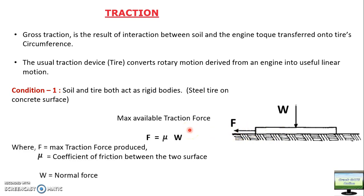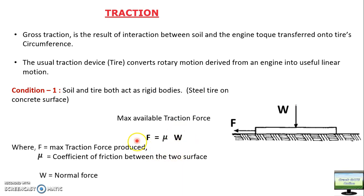There will be some coefficient of friction between the two bodies and then force F is acting in this direction. The resultant maximum available traction force will be F equals mu times W. This is a simple frictional theory which you might have read in your physics books, so I will not explain much into this — it is a very simple concept.